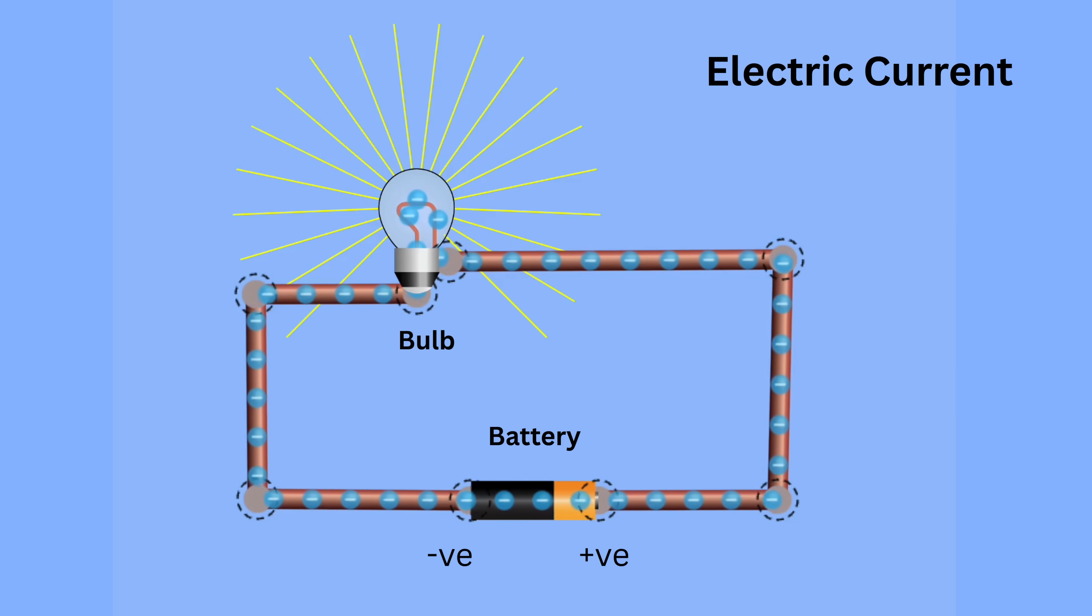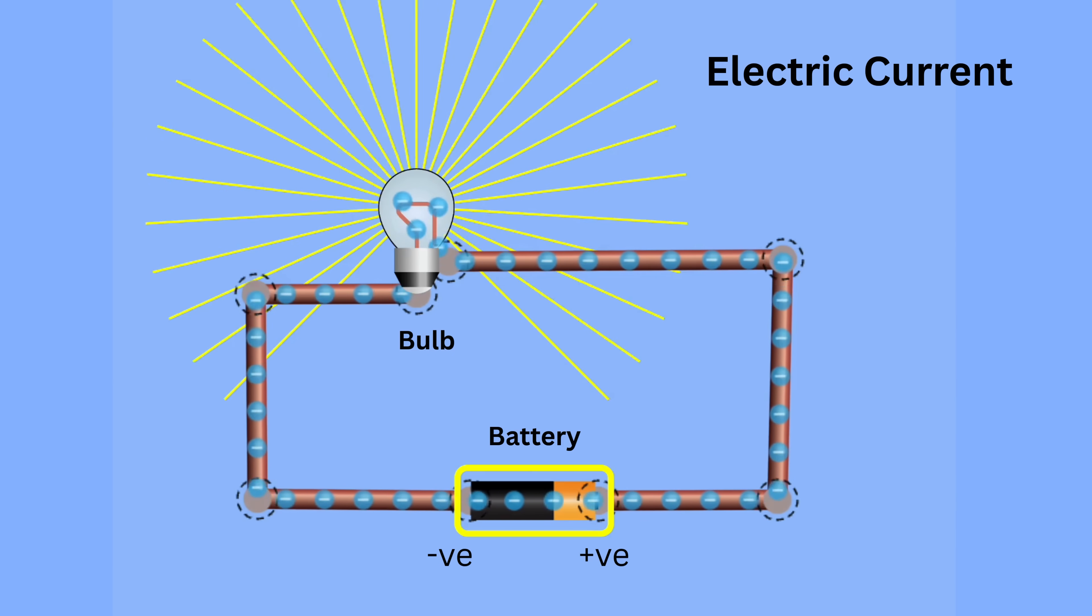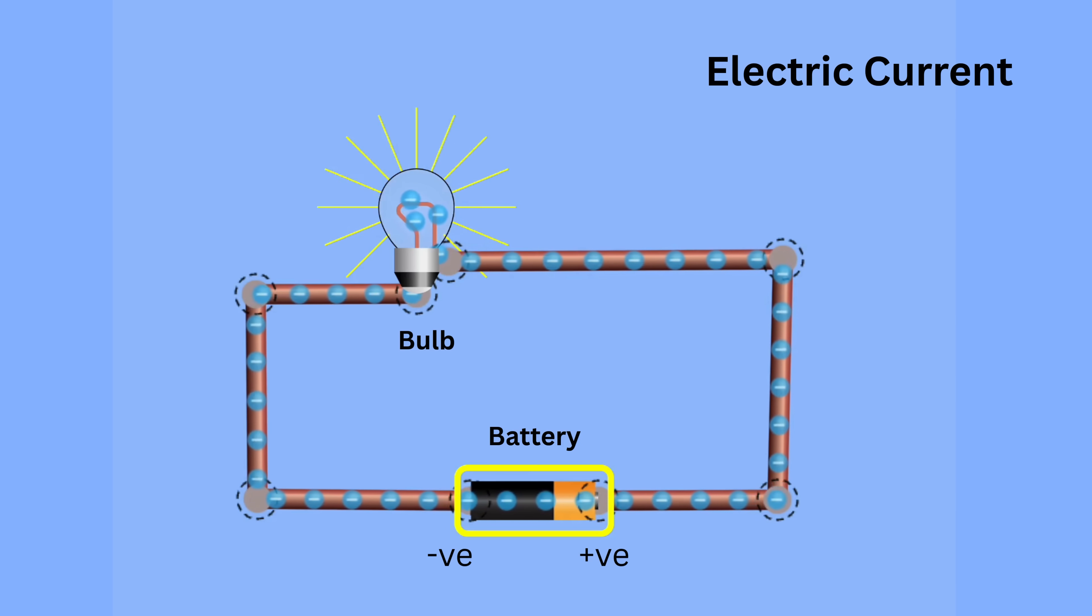The greater the number of electrons flowing per second, the stronger the current. This flow continues as long as the battery can maintain the potential difference. Once the battery's energy is used up, the flow slows down and eventually stops.